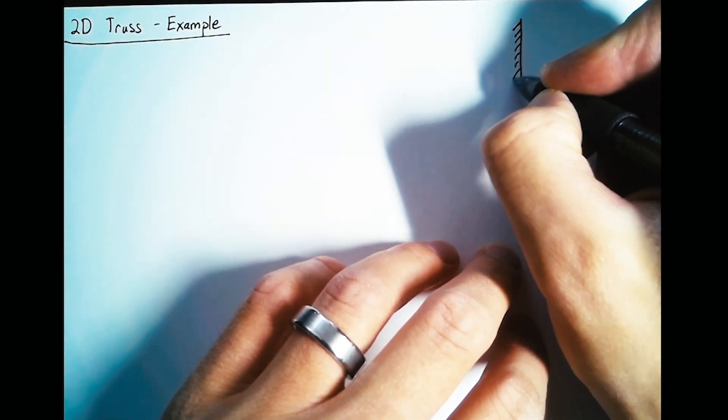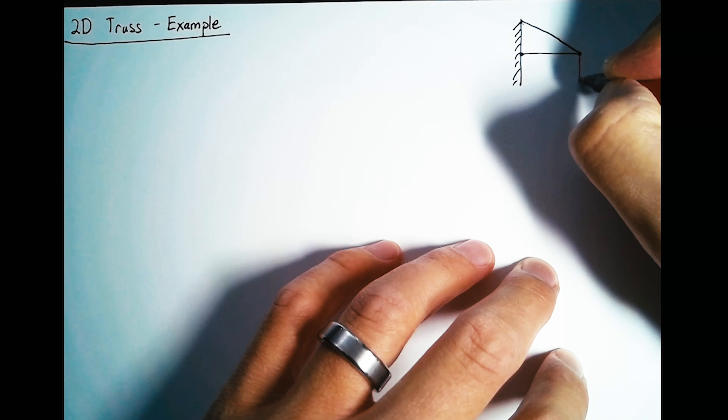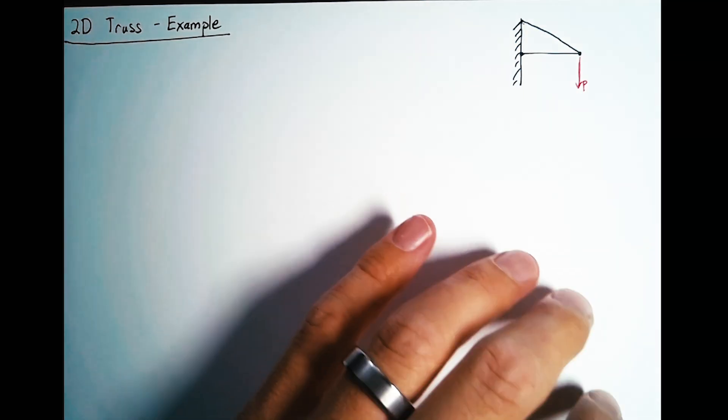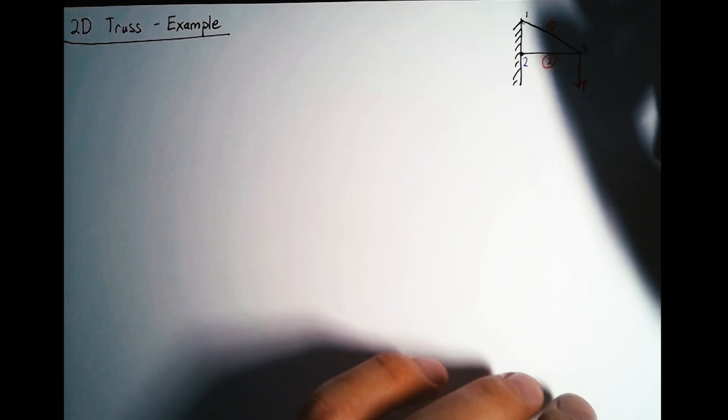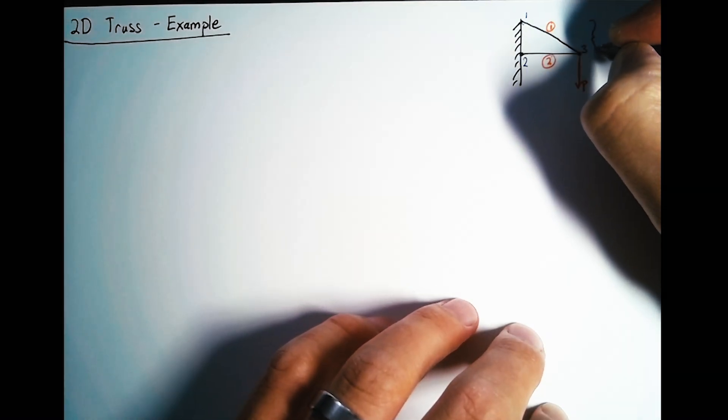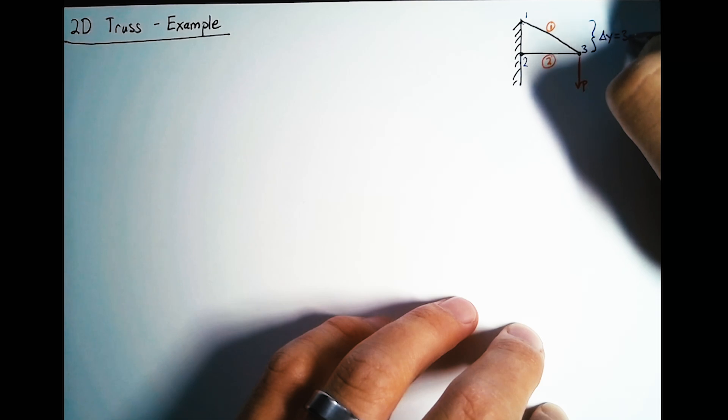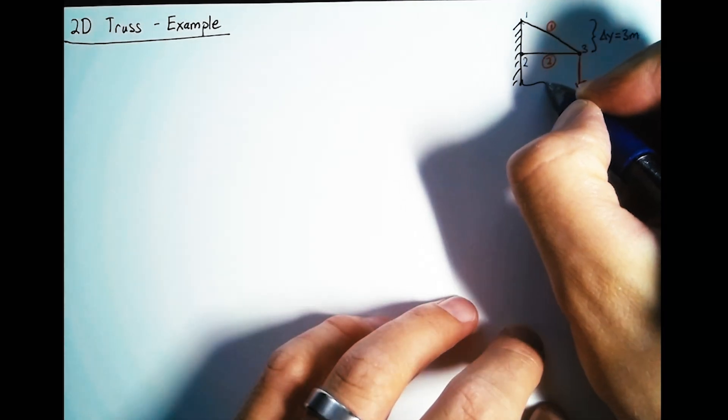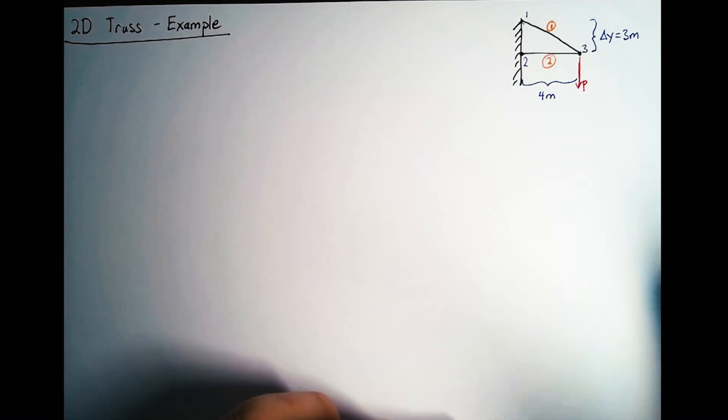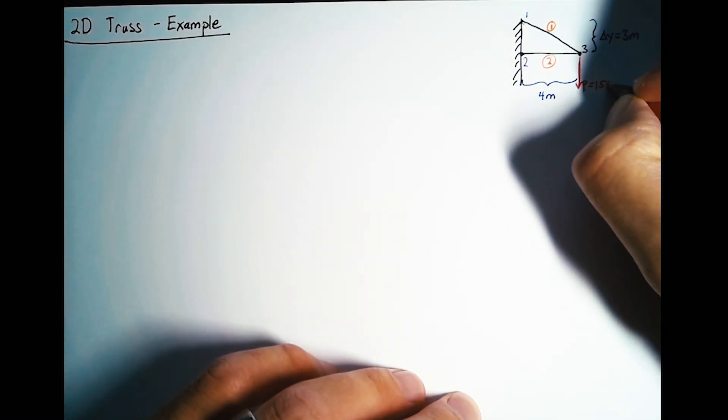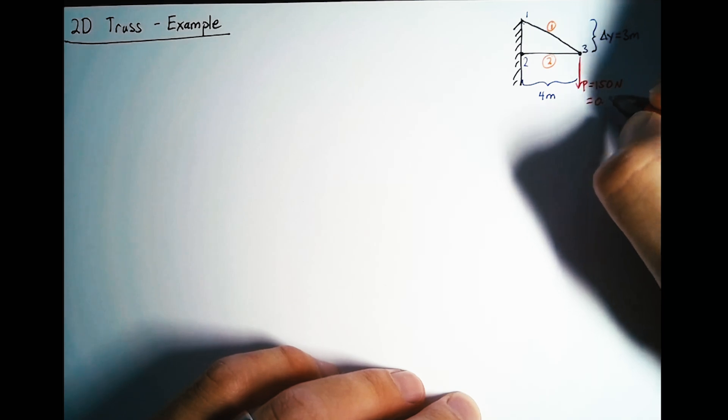To get a quick picture of what our truss looks like, we're going to have two elements with three nodes, and there will be a load on this outside node that we're going to call P. The distance in Y between nodes 1 and 3 is going to be 3 meters, and the distance in X is going to be 4 meters. This gives us a nice 3-4-5 triangle to work with. We're going to set this force P to 150 newtons, or 0.15 kilonewtons.